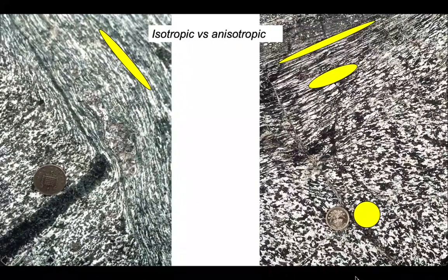And we can pick these out using strain ellipses to represent the intensity of the shape fabric. So in both cases, we've got a gradient in the intensity of anisotropy.